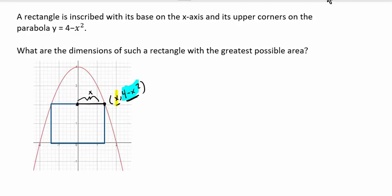And the y value of a point, in this case 4 minus x squared, always gives you the height of the point above the x-axis. So that would be this dimension right here, 4 minus x squared.